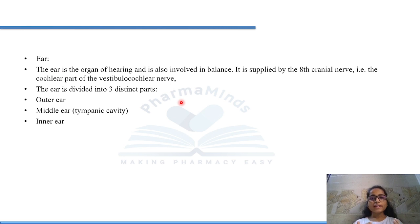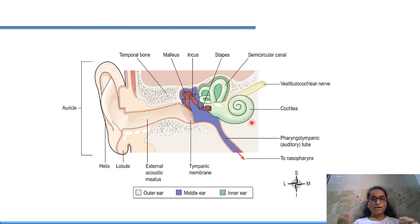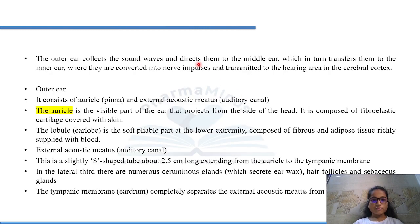Our ear is divided into three parts: first is outer ear, then middle ear, then inner ear. The outer ear collects the sound waves and directs them to the middle ear, which in turn transfers them to the inner ear, where they are converted into nerve impulses and transmitted to the hearing area in the cerebral cortex.